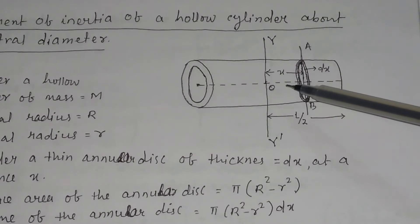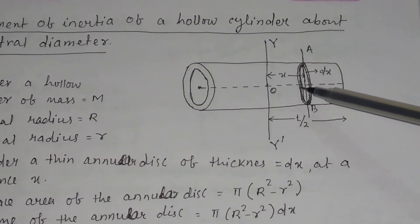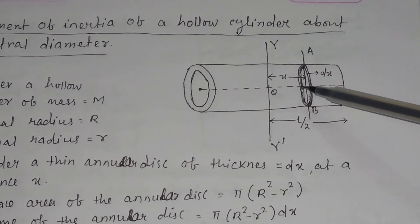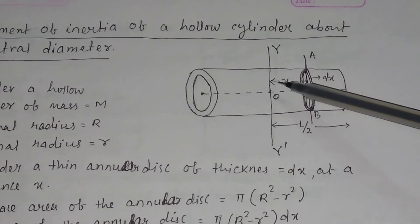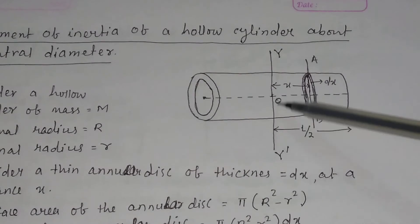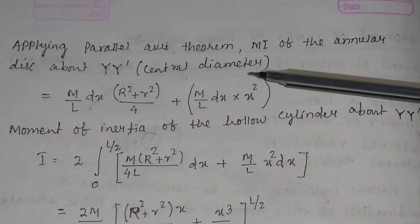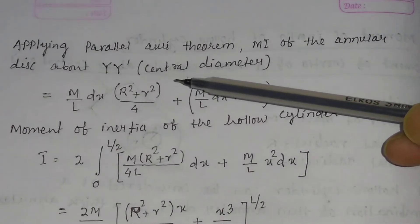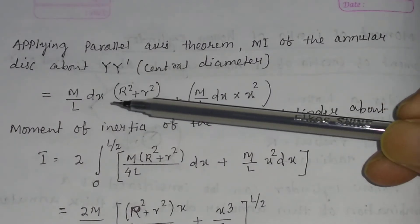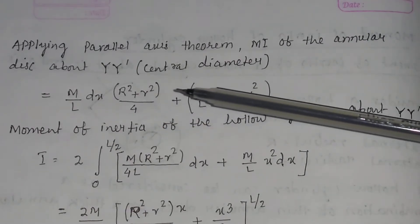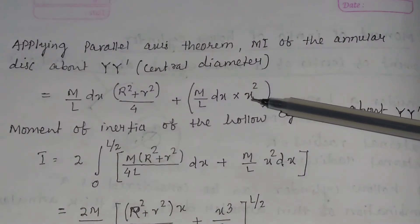Applying the parallel axis theorem, the moment of inertia of the annular disc about y-y' can be calculated as I = I_cm + m × x², where x is the distance between the two parallel axes. The moment of inertia about y-y' equals m/(4l) × (R² + r²) dx plus m/l × x² dx.